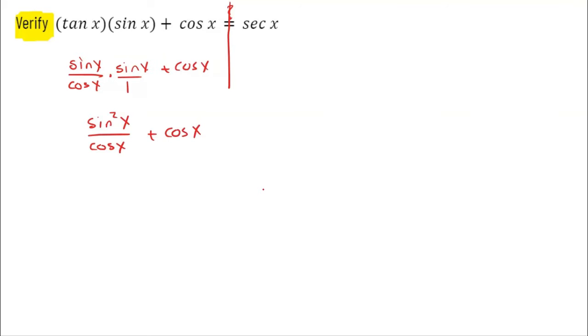Now what I'm going to do is add, because if I look at the right-hand side that I want to be my answer, there's no plus sign, so I need to add these together. But I need a common denominator to add. So my common denominator is going to be multiplying the two denominators I have, which is going to be cosine of x times one, or just cosine of x. This fraction already has that common denominator, so I'm going to leave the sine squared of x alone.